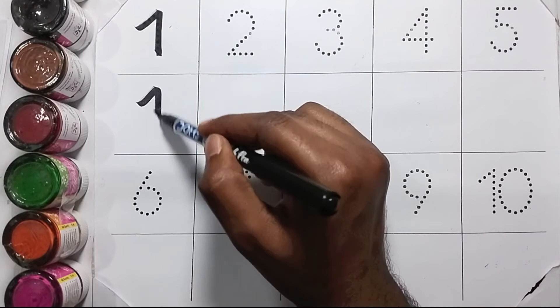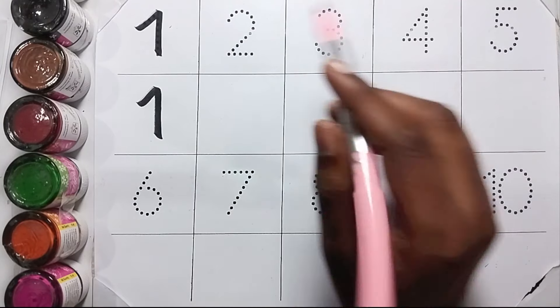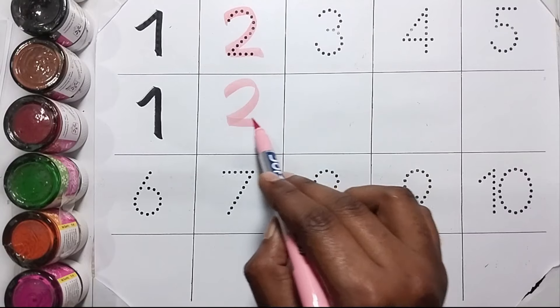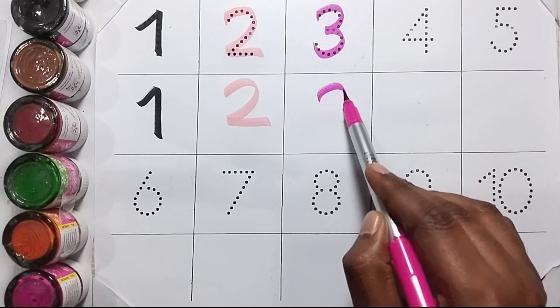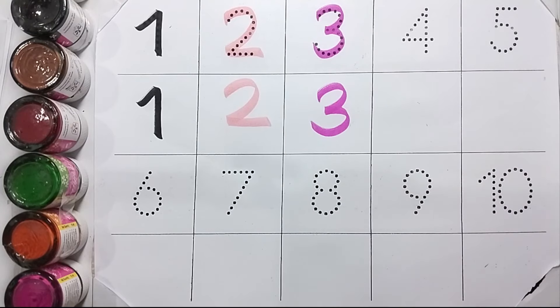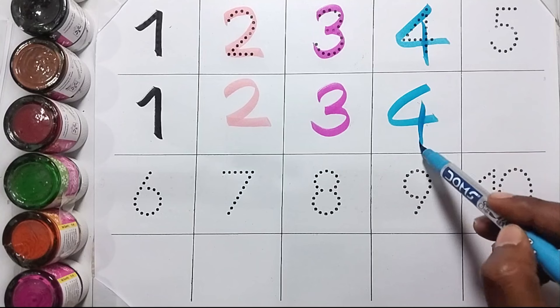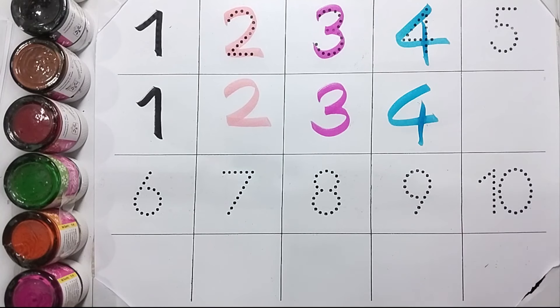One: O-N-E, one. Two: T-W-O, two. Three: T-H-R-E-E, three. Four: F-O-U-R, four. Five: F-I-V-E, five.